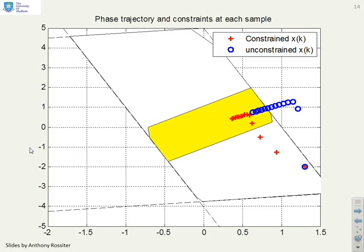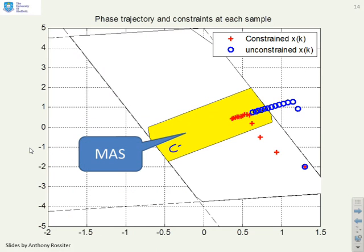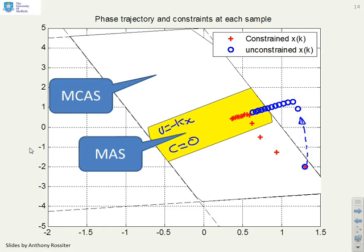This plot shows the sets. This yellow bit is the MAS, so that's what happens in essence if c = 0. If you assume that you're only using u = -Kx then you will only satisfy constraints if you start inside this yellow box. If you start outside the yellow box then u = -Kx will lead to constraint violations and that's what you can see with this unconstrained: you get constraint violations because you're not inside the yellow box.